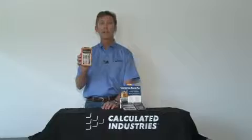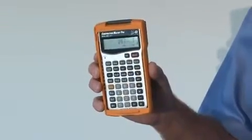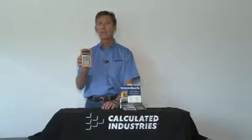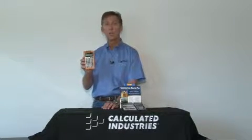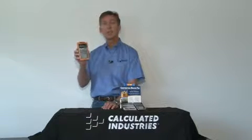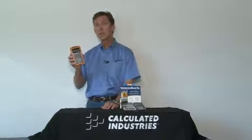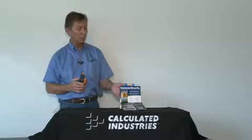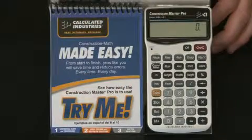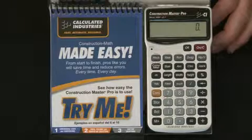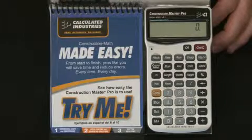The Construction Master Pro from Calculated Industries is an advanced construction math power tool that saves time and prevents costly errors for hundreds of thousands of construction professionals across the country and around the world. You may have seen them on job sites, in classrooms, or in meetings, or on a display stand in your local building material supply store. Let me take just a couple of minutes to show you how it can improve your productivity and profitability every single day.